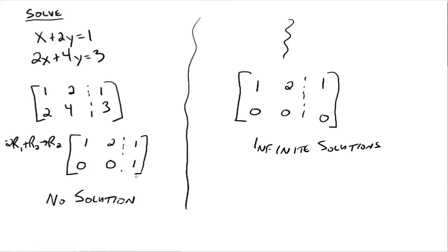So these are the special cases when using matrix row transformations — what can happen when you get no solution or an infinite number of solutions. Otherwise you're going to get one solution — one point, like we had in the previous two examples.